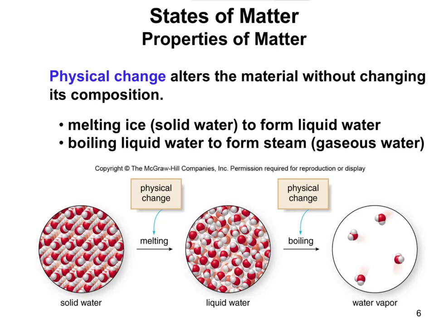Physical properties can be observed without changing the composition of the material — without changing the chemical formula at all. Physical changes are transitions from solid to liquid and liquid to gas, as you can see illustrated here.